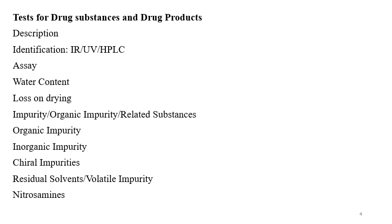Coming to impurities — that is organic impurity or related substances. Impurities may be organic impurities, inorganic impurities, or chiral impurities. These may be residual solvents as per ICH Q3C — class 1, 2, 3 solvents, also known as volatile impurities. Nowadays nitrosamines are also being tested, so nitrite and nitrate impurity testing is also performed and nitrosamine declaration is provided. These are the universal tests required to be done for all drug substances and drug products.